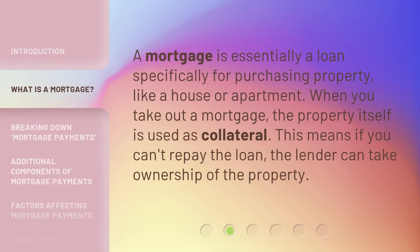A mortgage is essentially a loan specifically for purchasing property, like a house or apartment. When you take out a mortgage, the property itself is used as collateral. This means if you can't repay the loan, the lender can take ownership of the property.